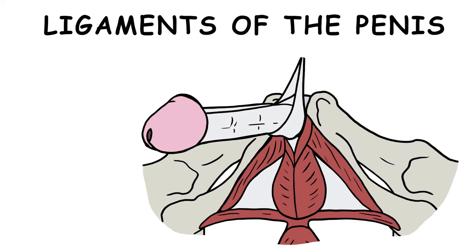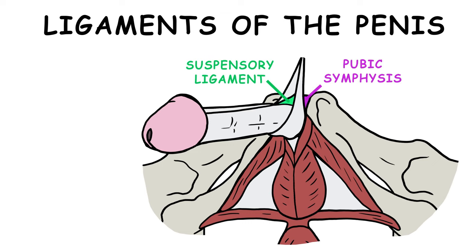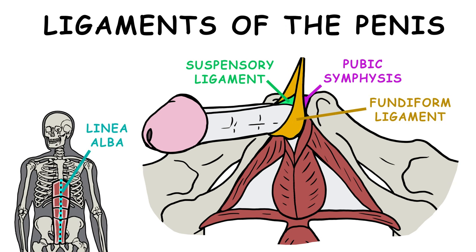Two ligaments support the root of the penis: the suspensory ligament, which connects to the pubic symphysis, and the fundiform ligament, which runs down the linea alba, around the penis, and then attaches to the pubic symphysis.